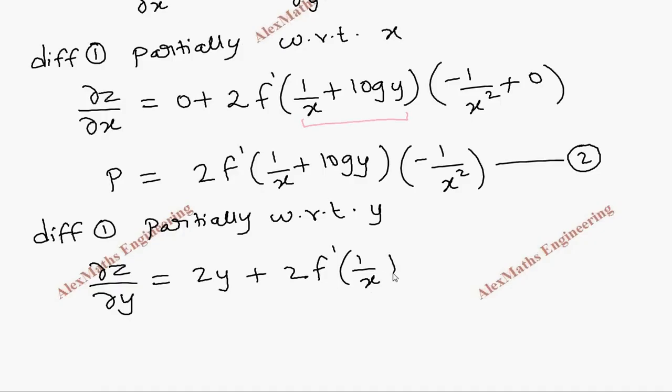Inner function should be written as it is. Then as per the chain rule, we have to find the differentiation of the inner function and write it here. x is constant now because we are doing partial derivative with respect to y. So, 0, and log y is 1/y.